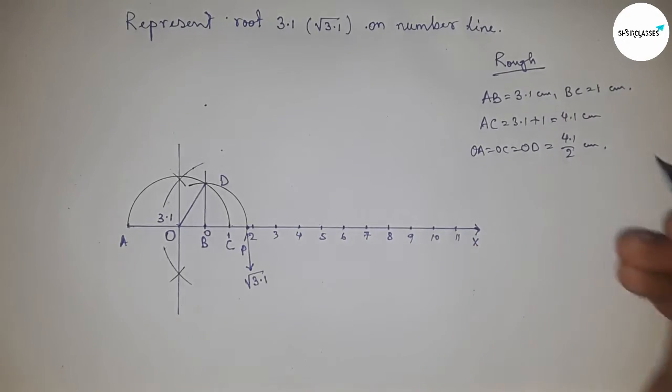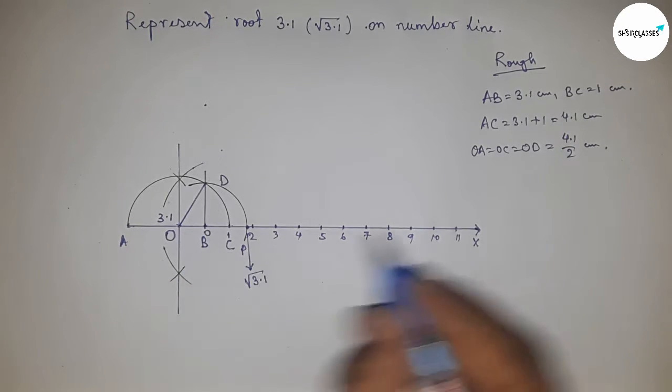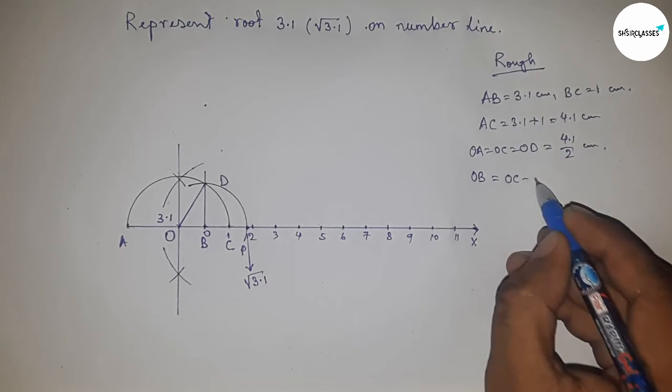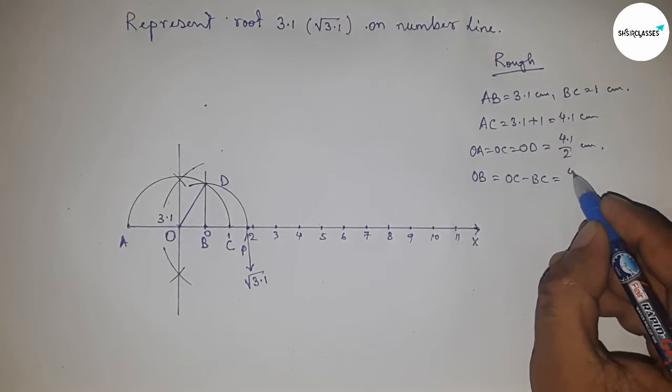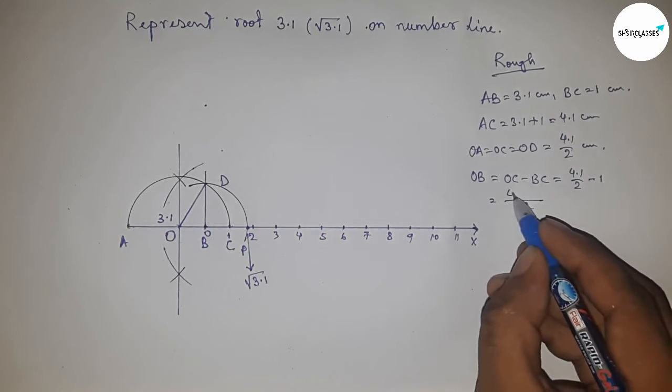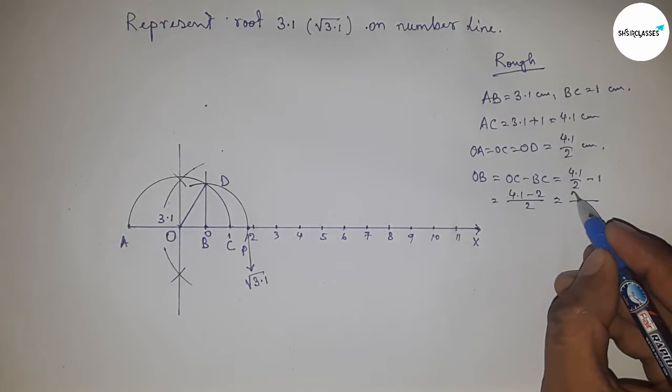Now distance OB equals OC minus BC. Putting the values of OC and BC and calculating, this is 2.1 by 2 centimeters.